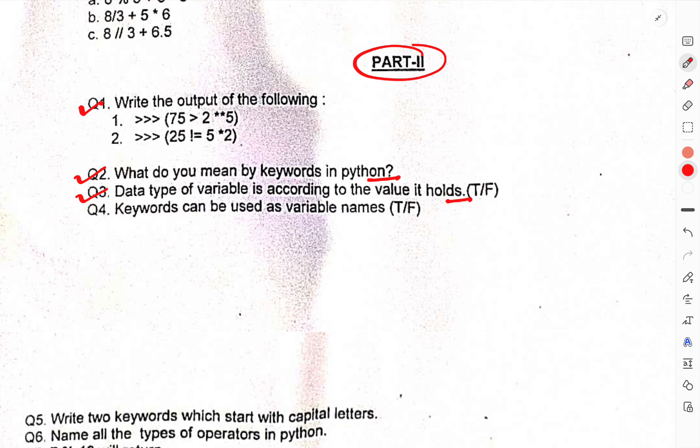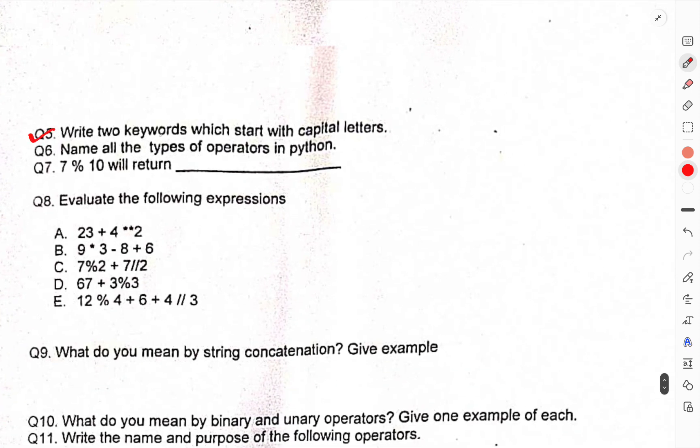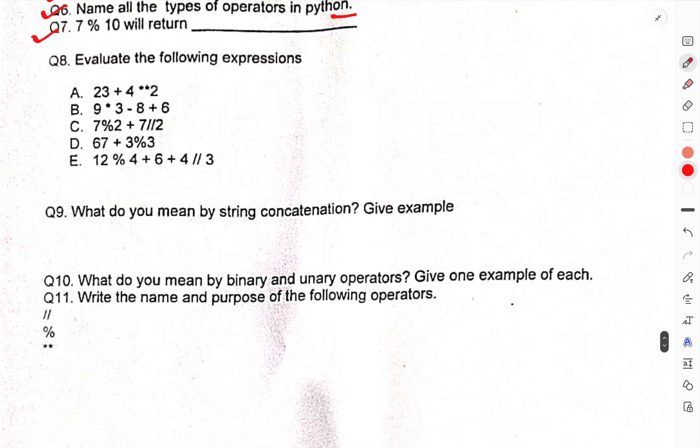Name all the types of operators in Python. 7 percent 10 will return? Evaluate the following expressions. What do you mean by string concatenation? Give example. What do you mean by binary and unary operators? Give an example of each.